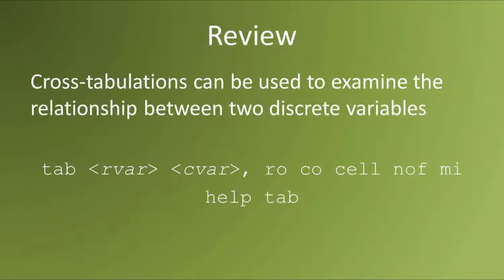Let's review. To produce two-way frequency tables, use the command tab. The syntax is: tab, space, the name of the row variable, space, the name of the column variable. You can use options like row, co, cell, nof, and mi to manipulate the information presented in the table. For more information on the tab command, type help tab in the Stata command window.